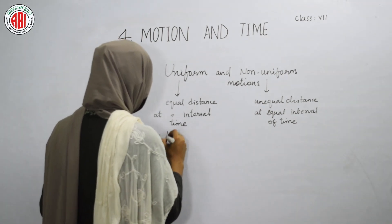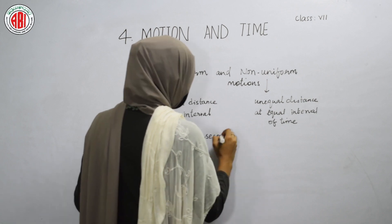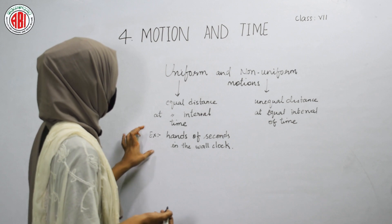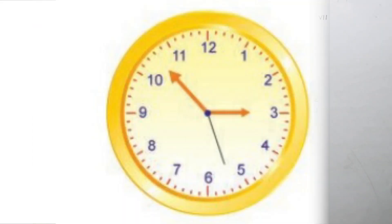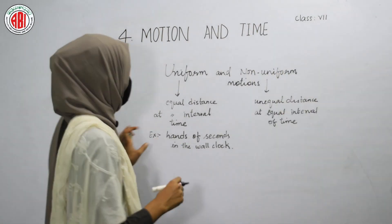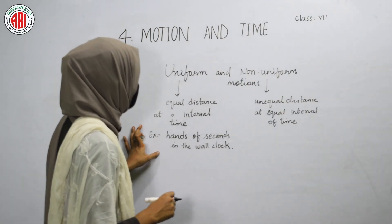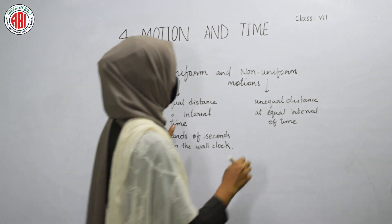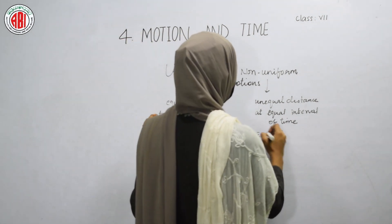Let us take an example to understand this more clearly. We take the example of the second hand of a wall clock. The second hand changes its position at equal intervals of time — after every one second it moves an equal distance. So the second hand of a wall clock shows uniform motion.